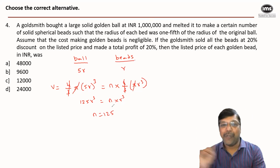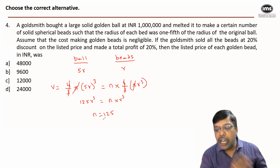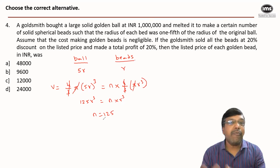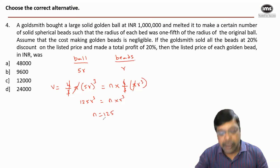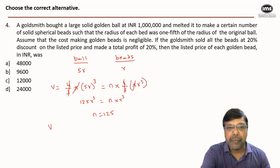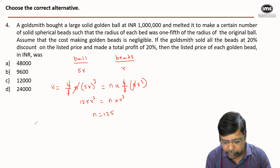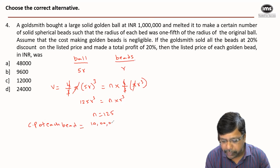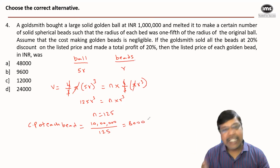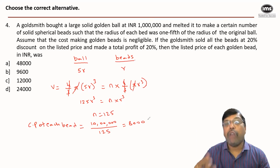To find the market price, we need the discount, selling price, profit, and cost price. The original ball was bought for 10 lakhs, and that cost is the same for 125 small spherical shaped beads. So the cost price of each bead is equal to 10 lakhs divided by 125, which gives 8000.